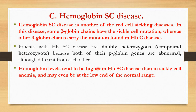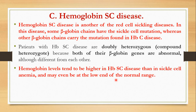Hemoglobin levels tend to be higher in HbSC disease than in sickle cell anemia, and may even be at the low end of the normal range. That is, the patient with sickle cell anemia has a low hemoglobin level in their blood, but the patient with HbC disease will have their hemoglobin level at the lower limit of normal — meaning it will be essentially normal.